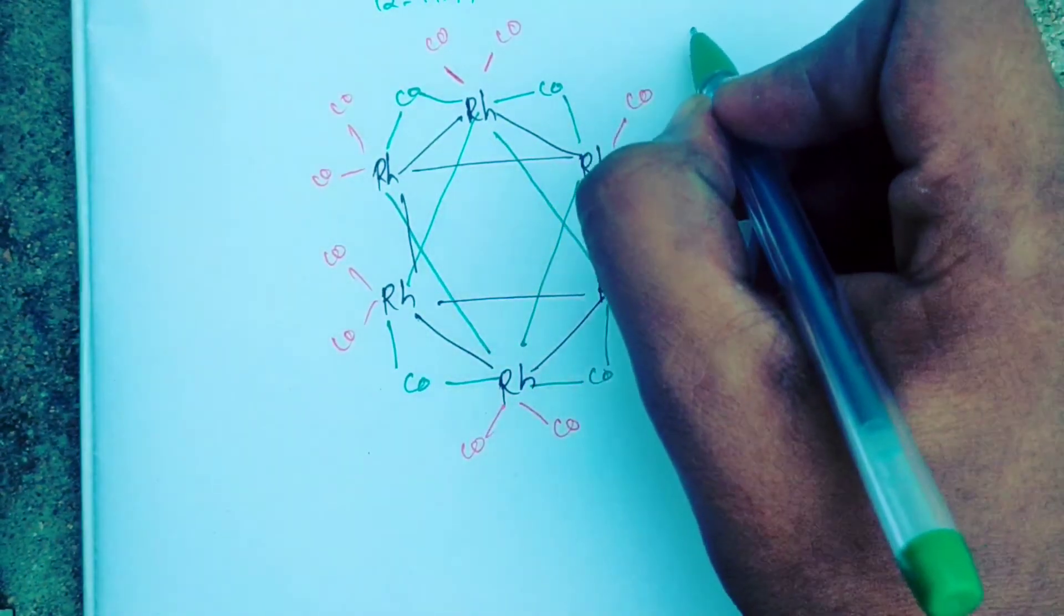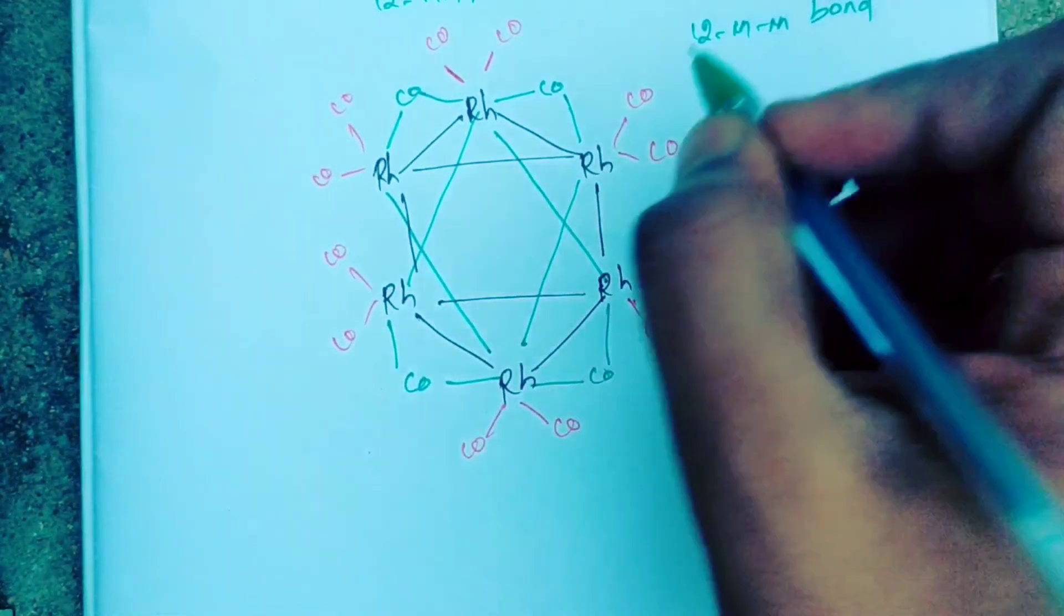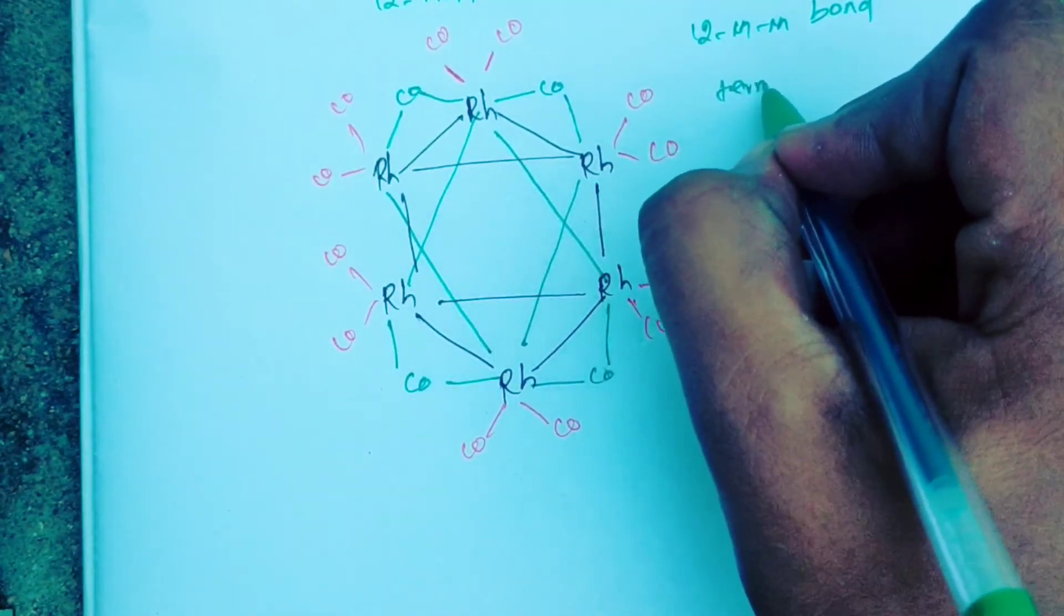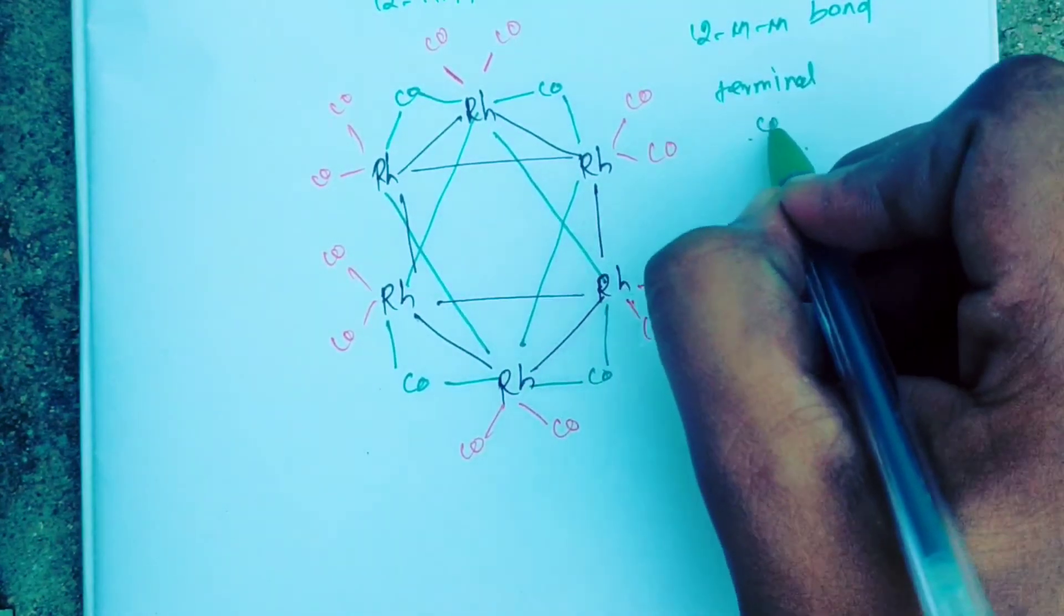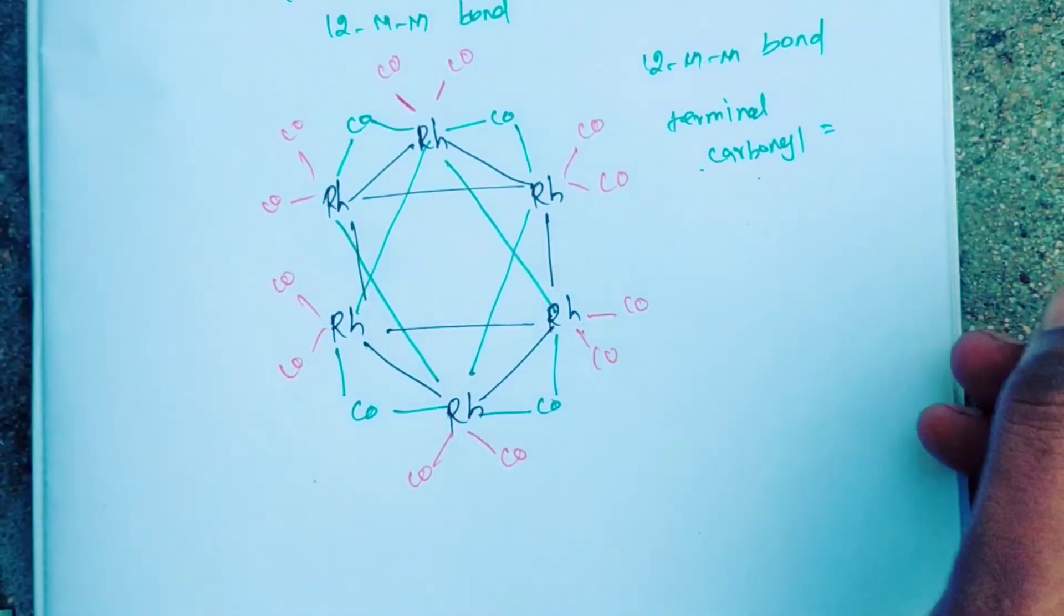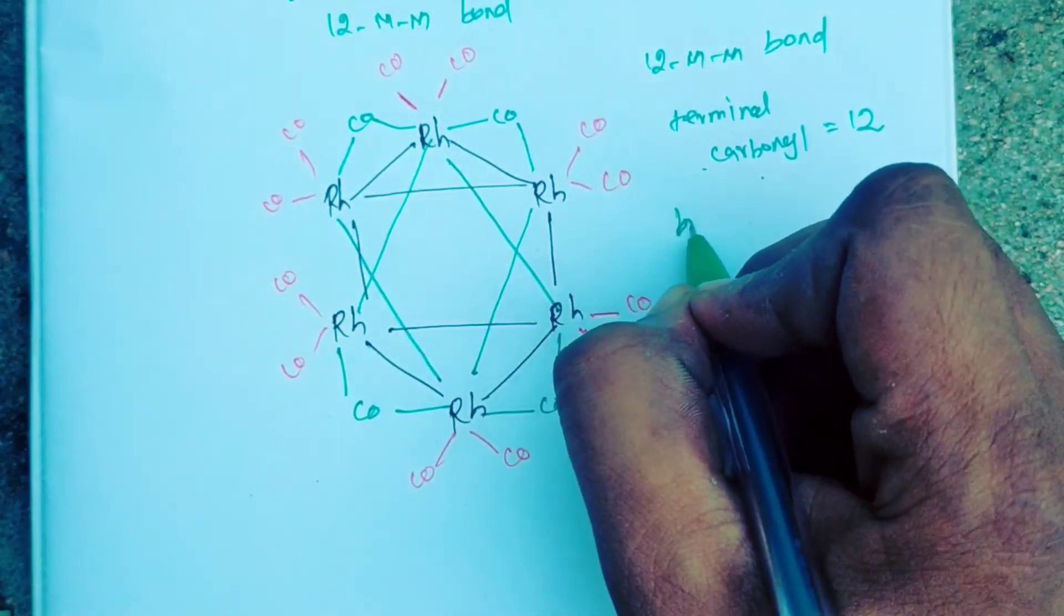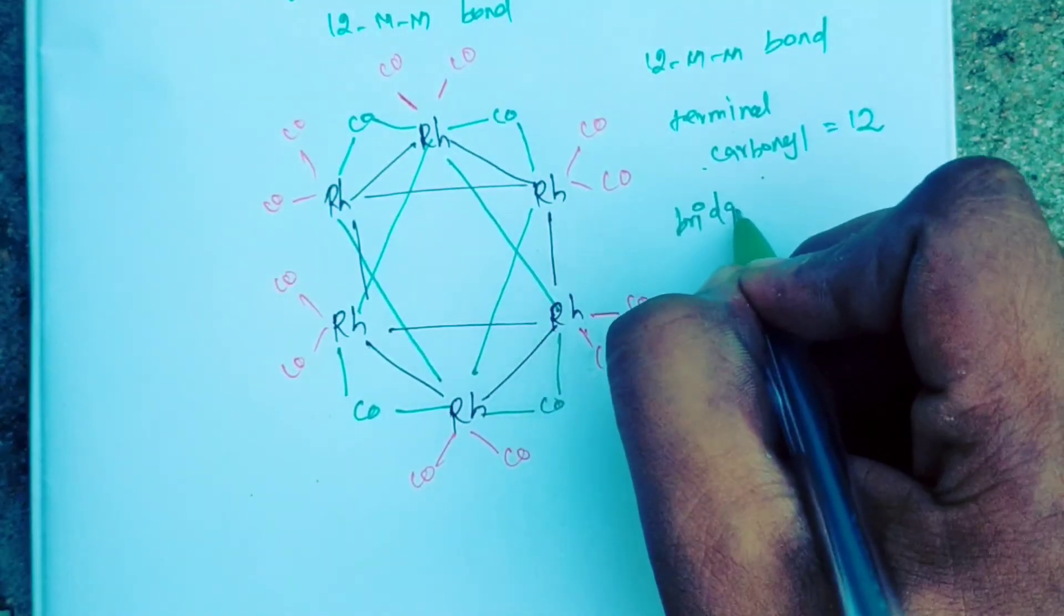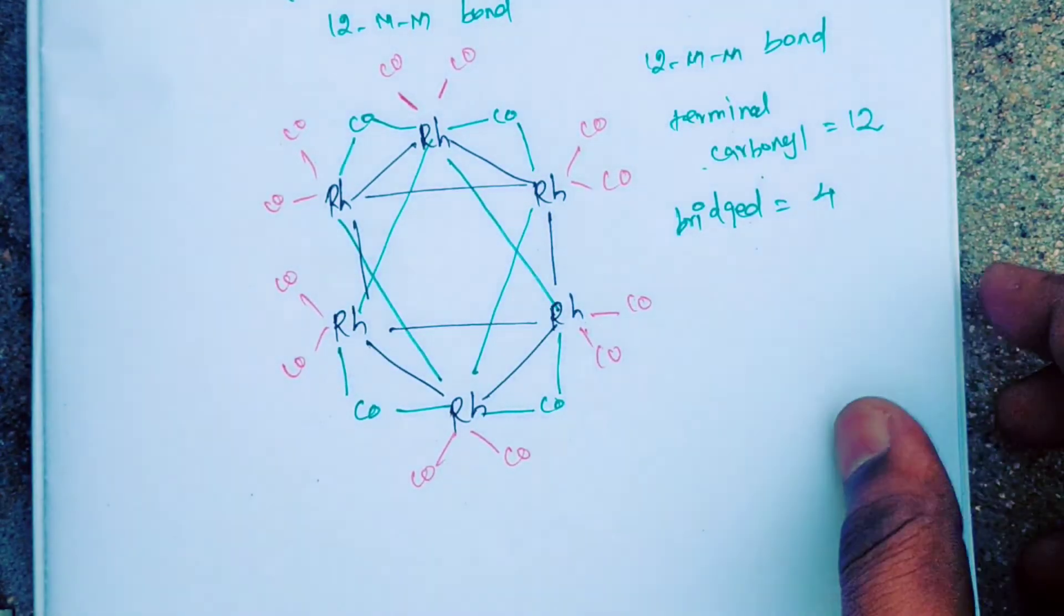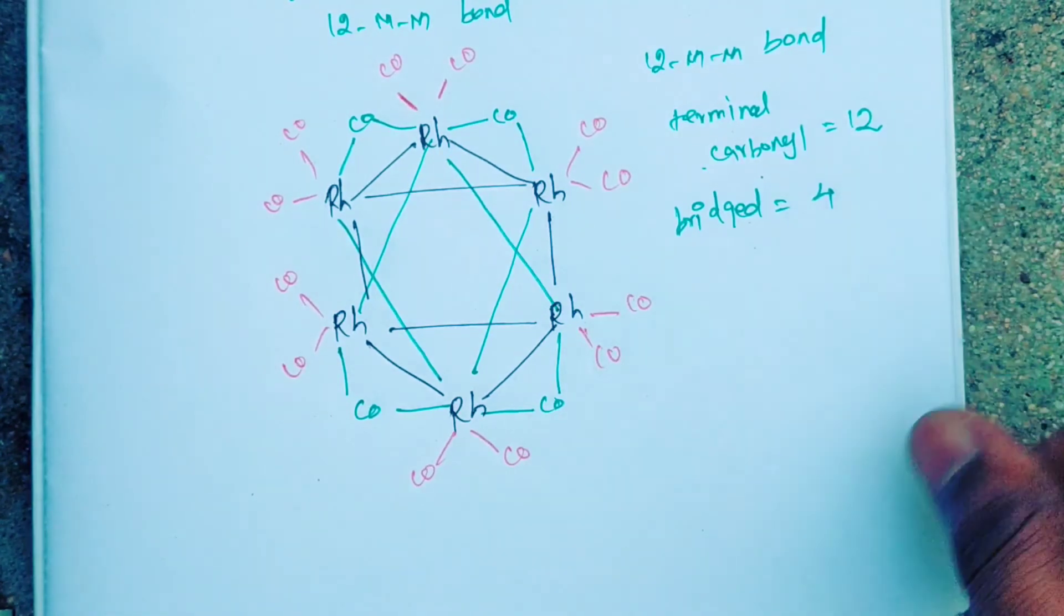The cluster contains 12 metal-to-metal bonds. For terminal carbonyls, there are 12 terminal carbonyls and 4 bridging carbonyls. Totally, 4 plus 12 is 16 carbonyls.